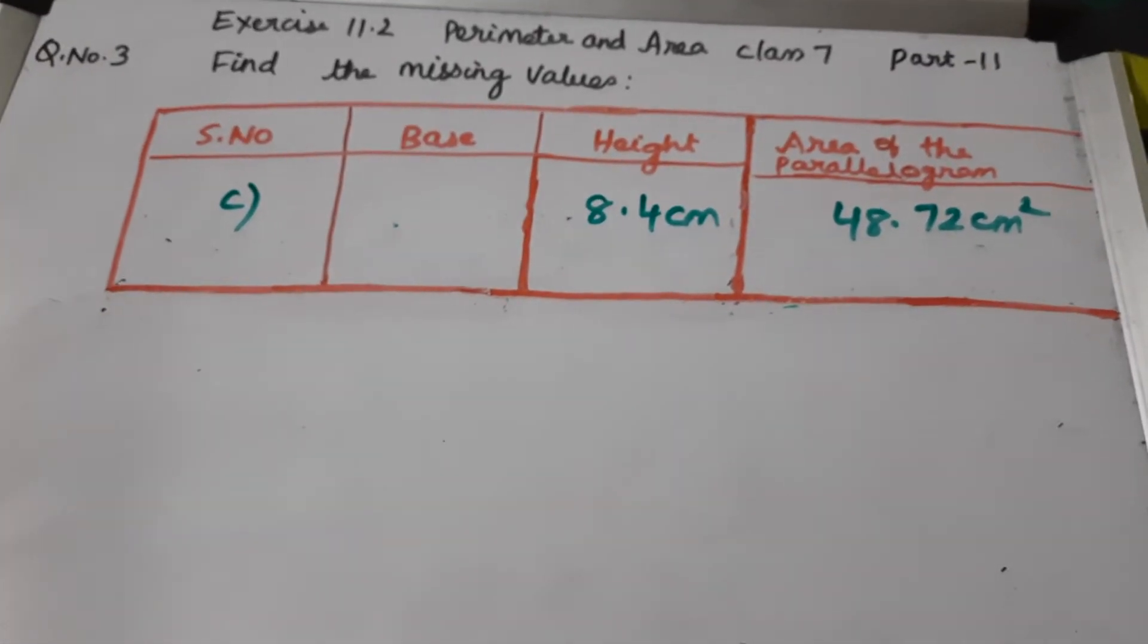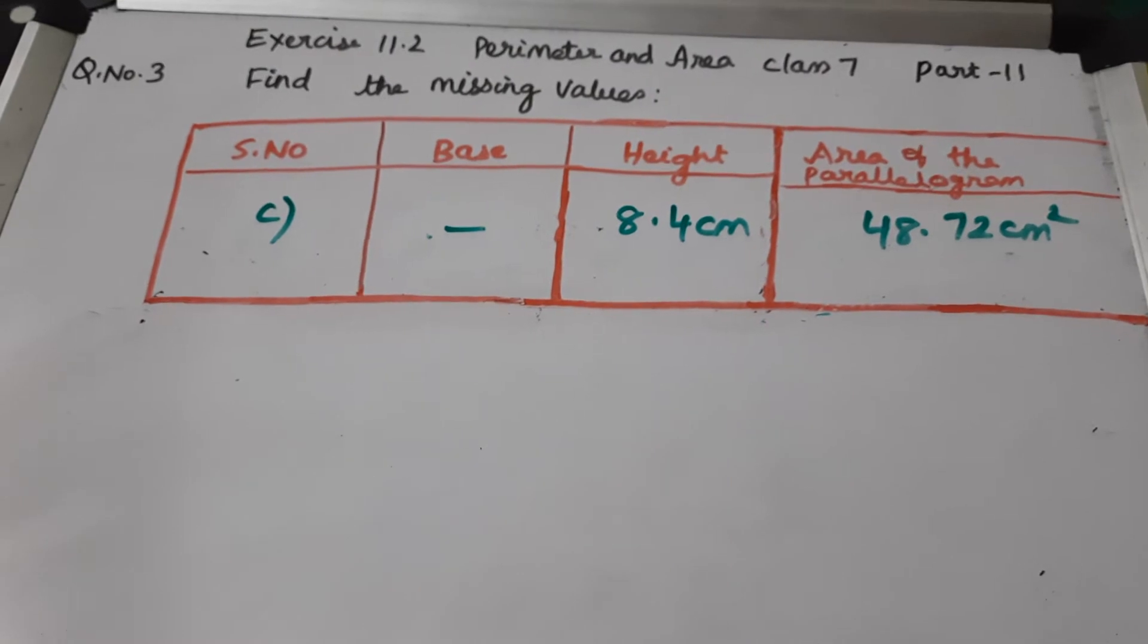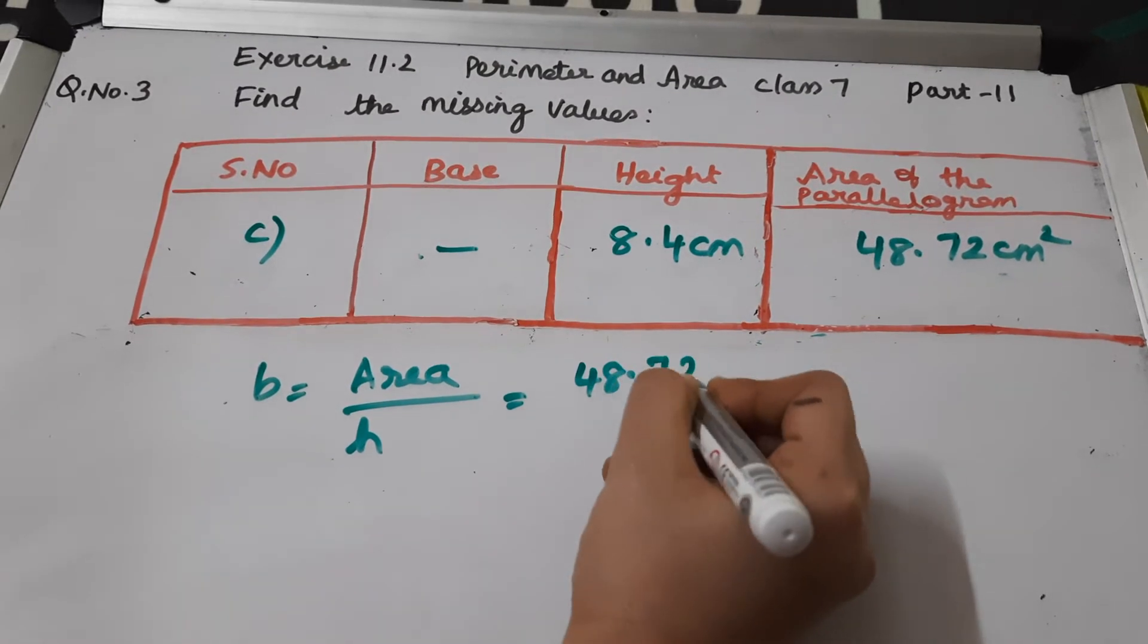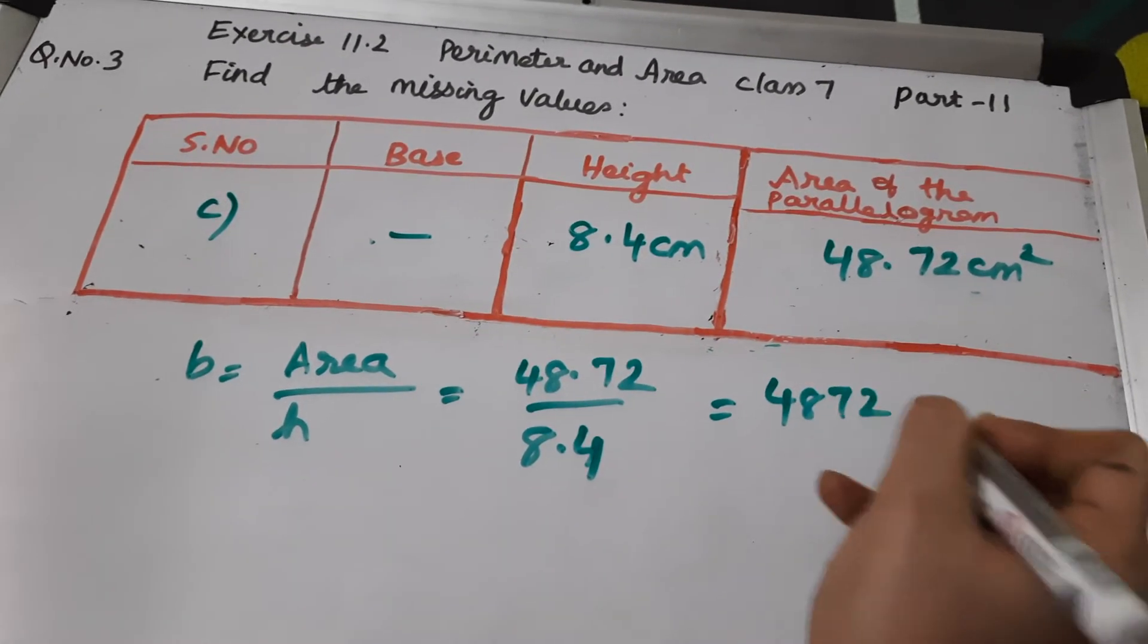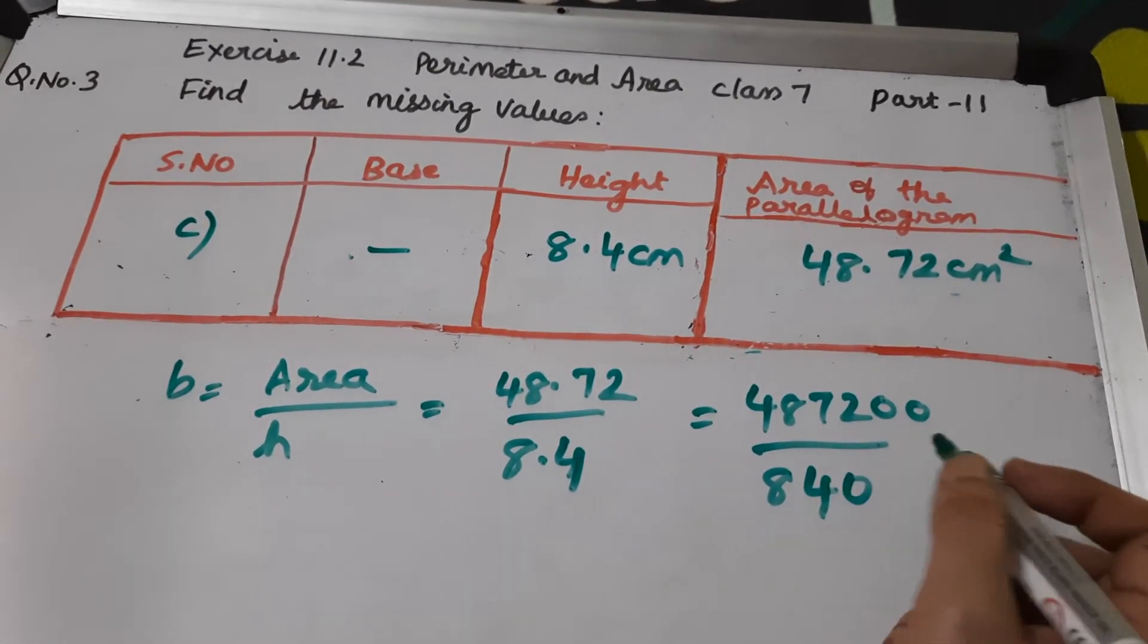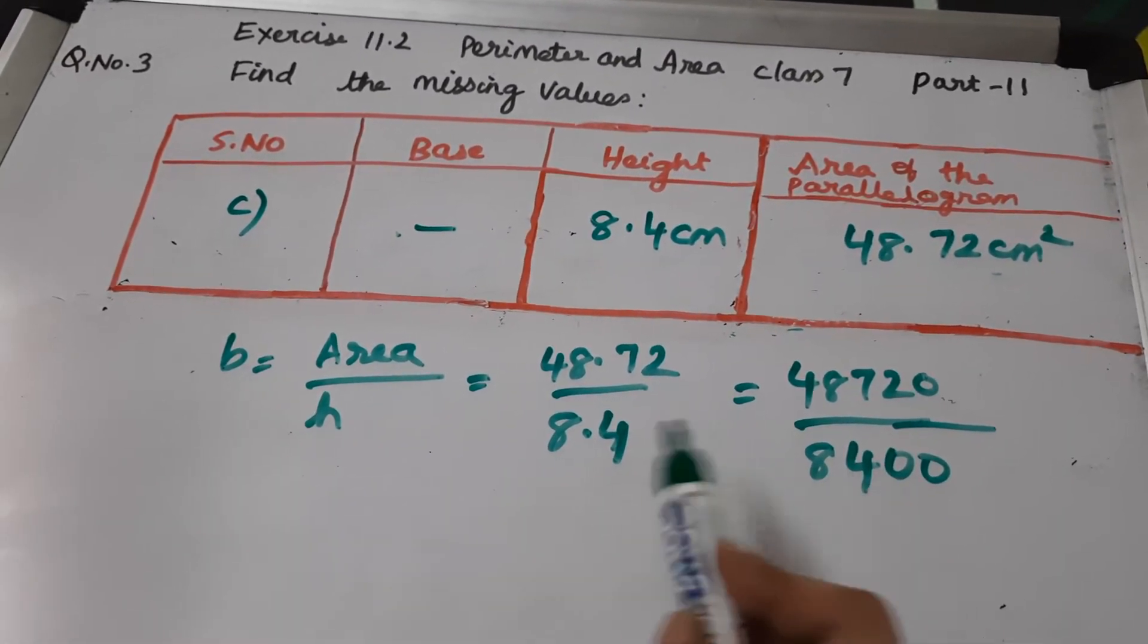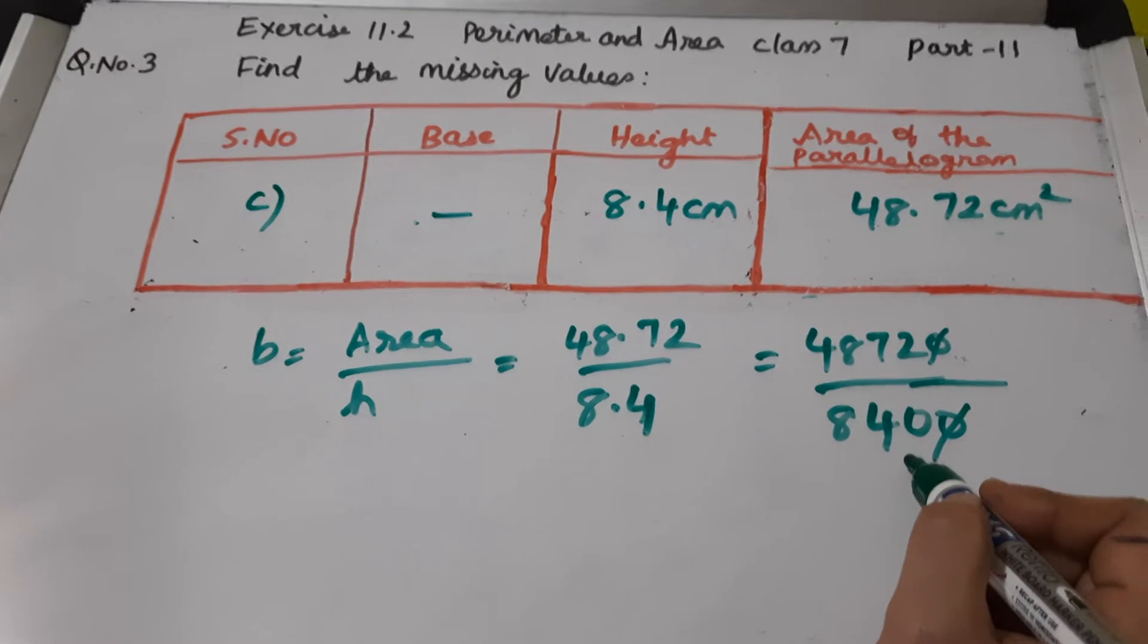Now we have the C bit here. In the C bit, base is not given. Height is given as 8.4 centimeters. Area is given. So to find the base, area of the parallelogram by height. So 48.72 by 8.4. First let's remove those points. Here you want to remove 2 decimal points, add 2 zeros here. Here you want to remove 1 decimal point, add 1 zero to the numerator. Now cancel these zeros. Now you have to simplify it.